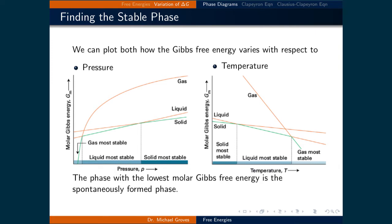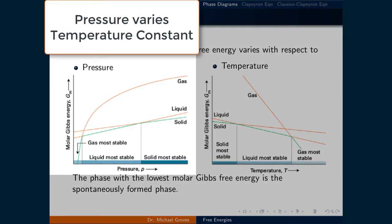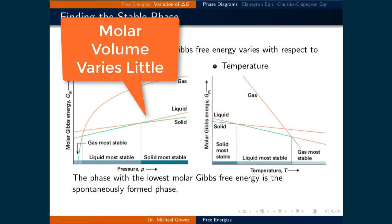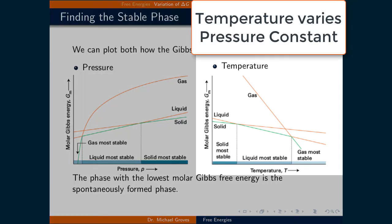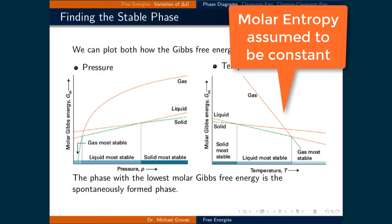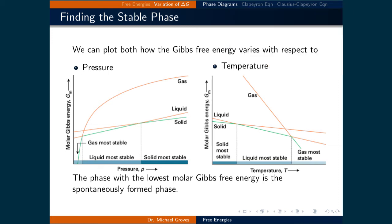We can plot how the Gibbs free energy varies with respect to both temperature and pressure. On the left-hand side of the slide, the Gibbs free energy is shown for the gas, liquid, and solid phases at a given temperature with respect to pressure. The solid and liquid parts are lines, reflecting that molar volume varies little with pressure, while the gas varies as the natural logarithm ratio of initial and final pressures. On the right-hand side, the Gibbs free energy varies for all three phases at a given pressure with respect to temperature.